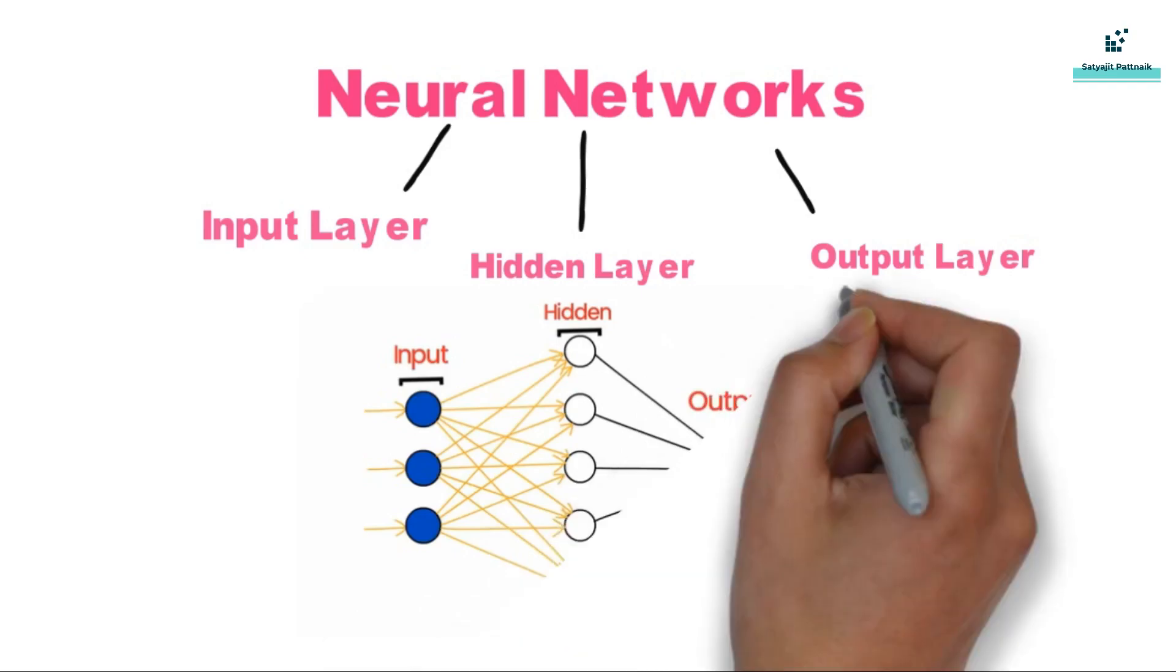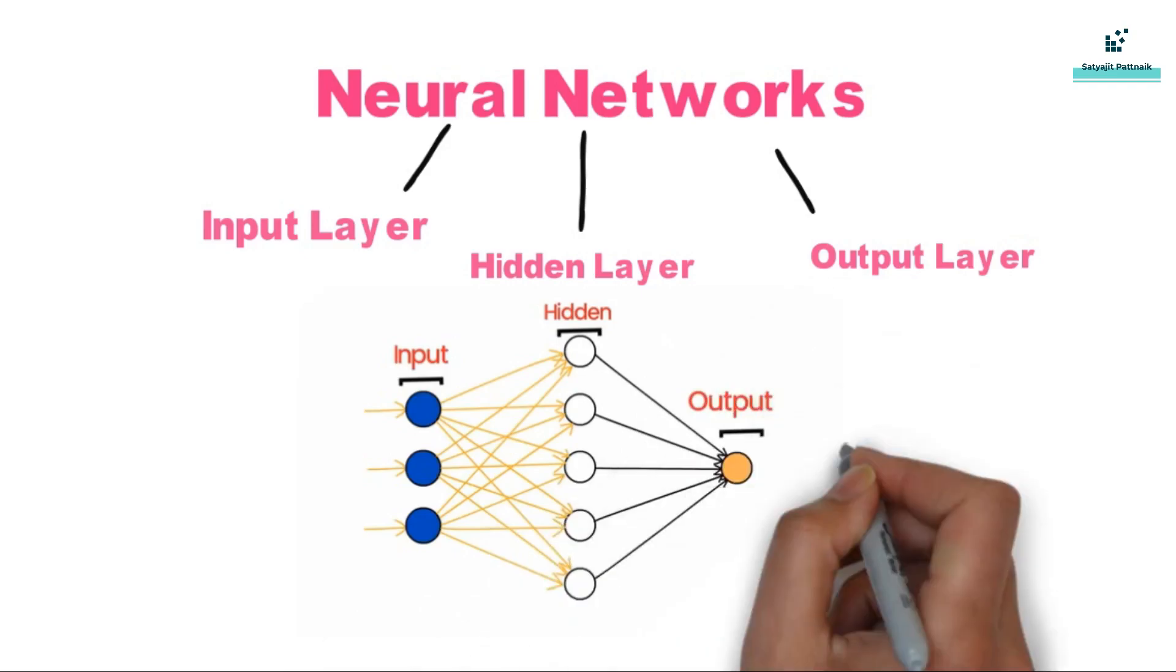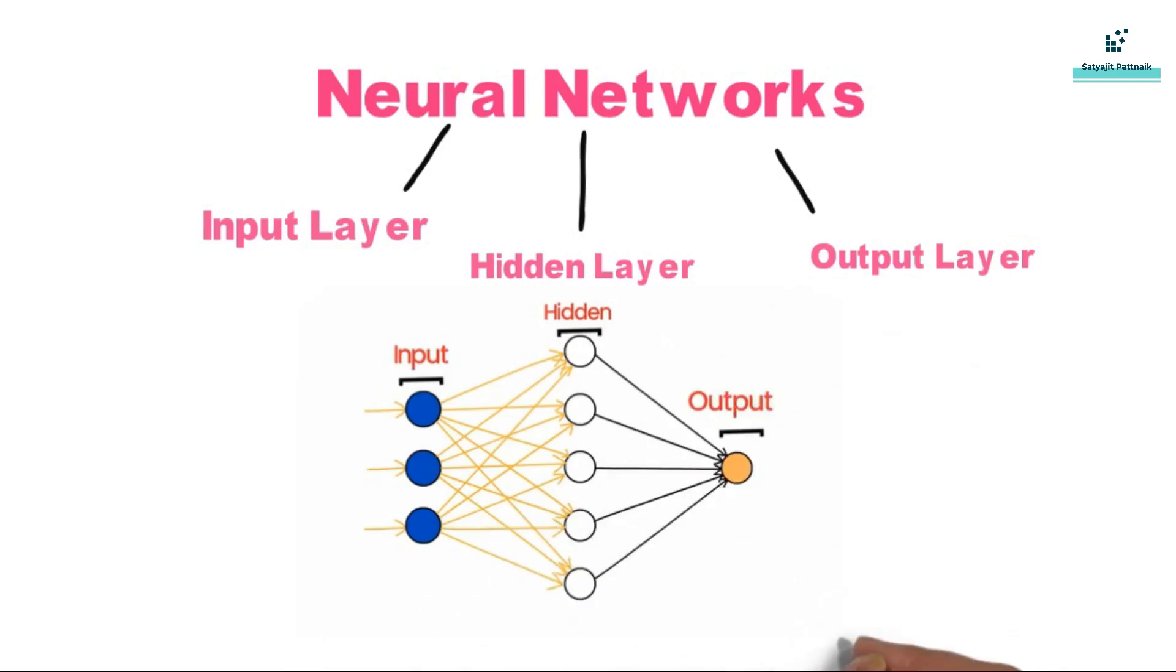Input goes through the dense layers and then the error is calculated, and then the weights are updated in the process of back propagation. And during this process of forward propagation and back propagation, weights are updated multiple times and we get an optimized output.